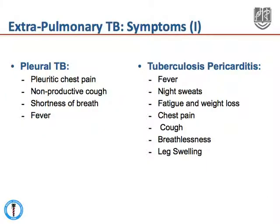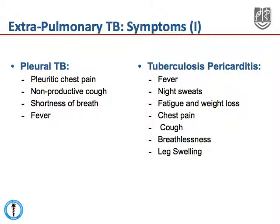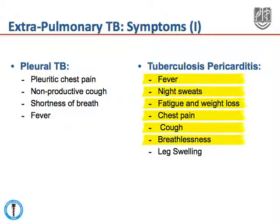The symptoms of extra-pulmonary TB will depend on the site of disease. Pleural TB presenting as pleural effusion often presents with pleuritic chest pain, an unproductive cough, and shortness of breath. TB of the pericardium will present with fever, night sweating, fatigue, weight loss, chest pain, and breathlessness. If there has been cardiac decompensation due to problems with cardiac filling and emptying, there can be leg swelling.